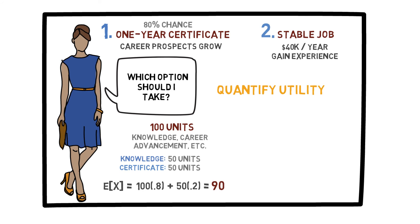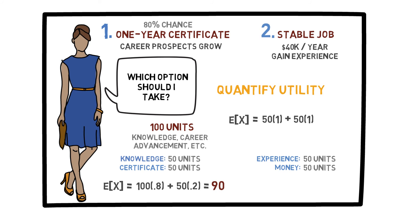Now let's discuss the utility in option 2. You assign a utility of 50 to the idea of just taking a job, due to the experience you could gain from it. Remember that this number was chosen relative to the utility assigned in option 1. Additionally, you consider the money you will earn with option 2 and assign that an extra 50 units of utility. Both of these things will happen with a probability of 1 if you take the job offer. Using our formula, this option gives you an expected utility of 100 units. Comparing these two options, it now seems that the second one is the best.